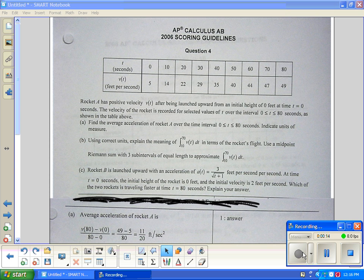It says rocket A has a positive velocity of V of T. It has to be enlarged upward from an initial height of zero feet at time zero. That's your initial condition. Velocity of the rocket is recorded for selected times of T over the zero to eighty seconds as shown above.